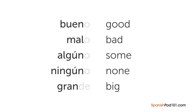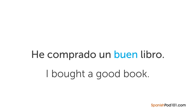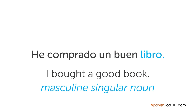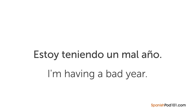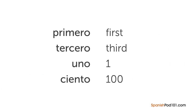Let's go through some examples. 'He comprado un buen libro' means 'I bought a good book.' Here, 'bueno' gets shortened to 'buen' because it's placed before the masculine singular noun 'libro.' Another example: 'Estoy teniendo un mal año' means 'I'm having a bad year' — 'malo' becomes 'mal' before the masculine singular noun 'año.' You can also see this with ordinal adjectives: 'primero' meaning first becomes 'primer,' and 'tercero' meaning third becomes 'tercer.'